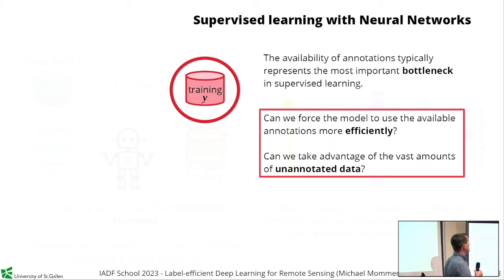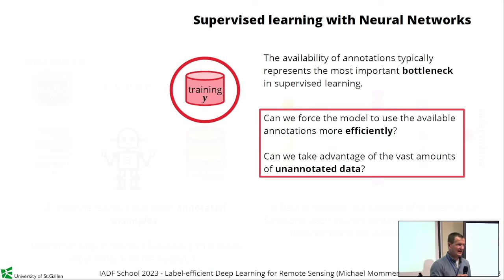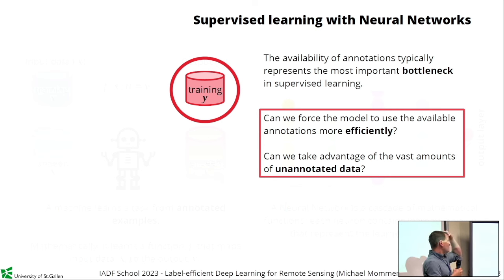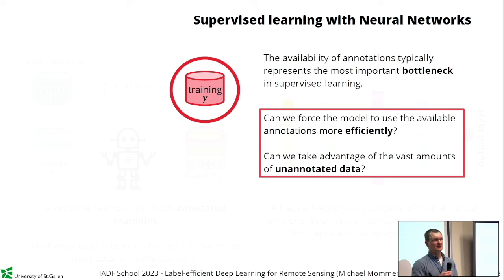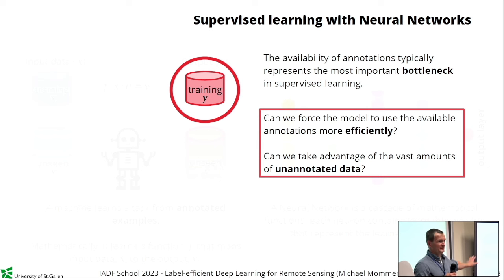More here than in other areas, we should ask ourselves: how can we make more efficient use of those annotations that we have? Can we take advantage of the vast amounts of unannotated data available? For instance, the Sentinel-2 archive has been around for a couple of years — there are terabytes and petabytes of data. Can we leverage that somehow? This is what the remainder of this presentation will be about.